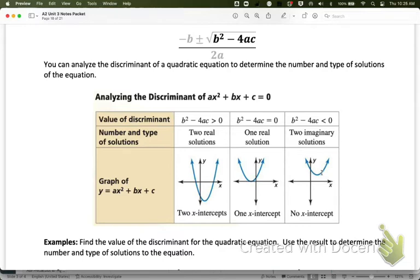Since a negative underneath the square root gives us imaginary solutions, if the value of b² - 4ac is less than zero (that means negative), then you're going to have imaginary solutions.